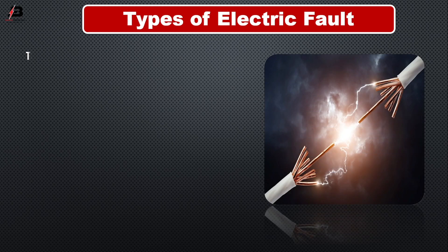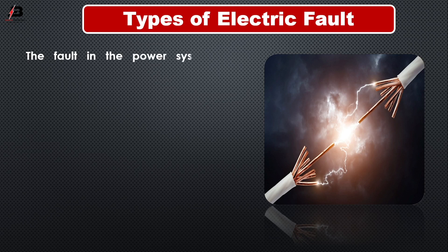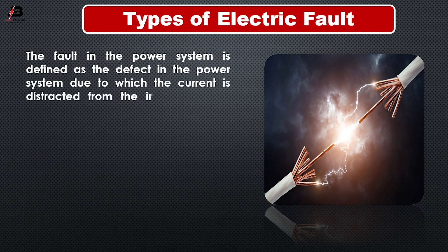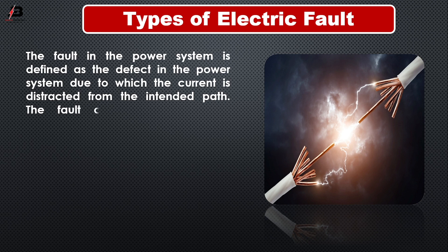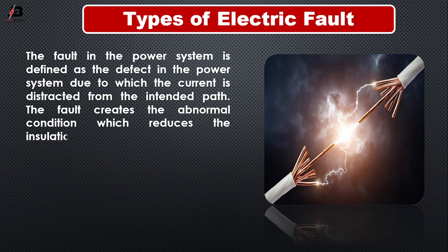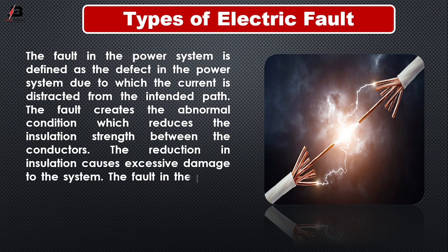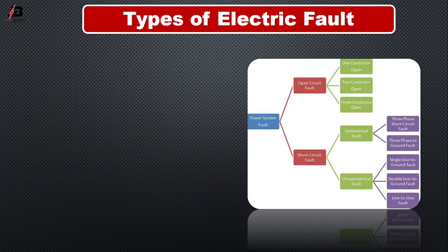Types of electric fault. The fault in the power system is defined as the defect in the power system due to which the current is distracted from the intended path. The fault creates the abnormal condition which reduces the insulation strength between the conductors. The reduction in insulation causes excessive damage to the system. The fault in the power system is mainly categorized into two types: number one, open circuit fault; number two, short circuit fault.